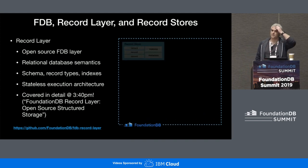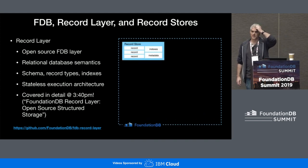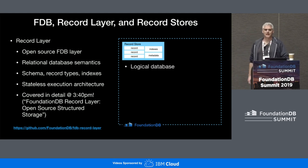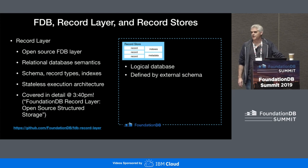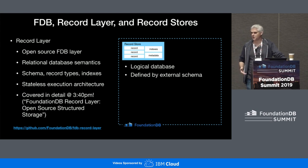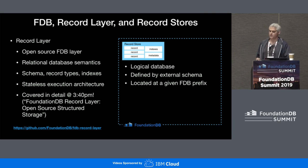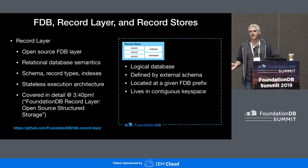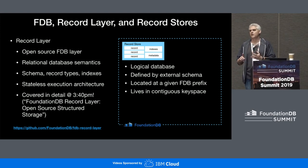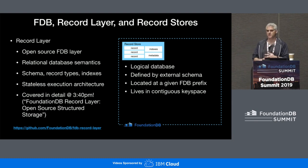One of the key abstractions of RecordLayer is the concept of a record store. A record store is a logical database. It is defined by an external schema — because if you think about it, say I'm developing the photos application, I have one schema for photos but I want to instantiate a billion databases. A record store is located at a given prefix in the FDB key space, and the entire database is contained within a contiguous key range. That means all the records, all the indexes, all the metadata about the state of the record store — all contained in a contiguous key range, and that becomes very important in a minute.